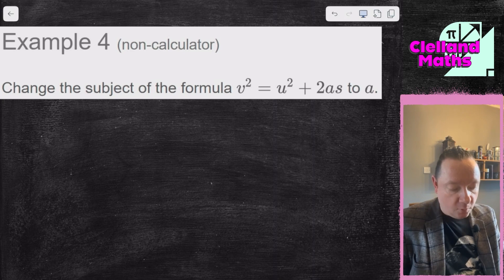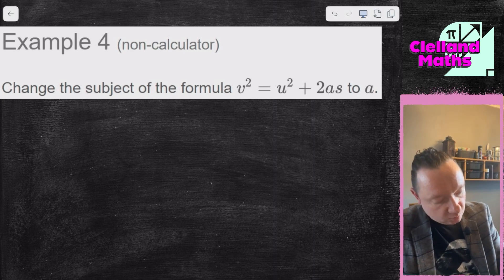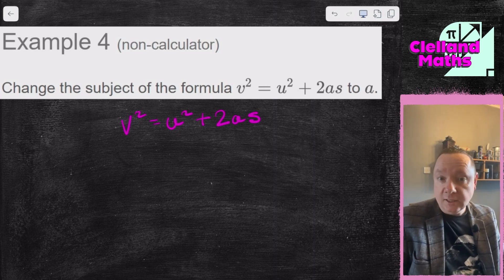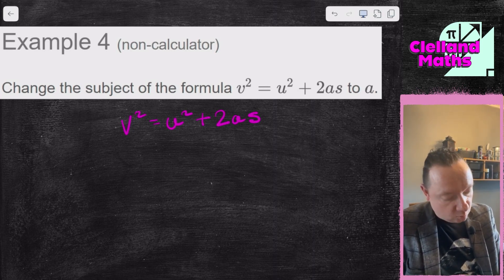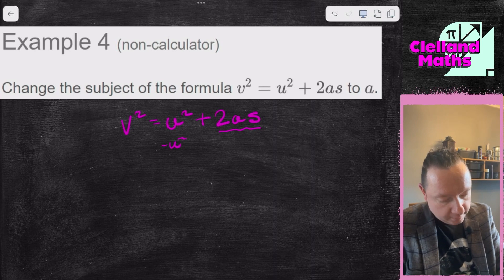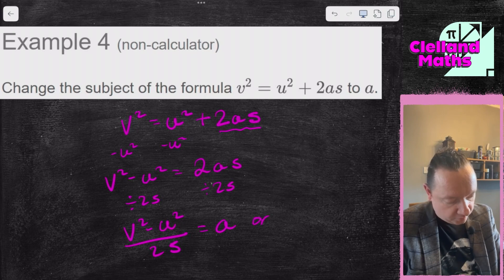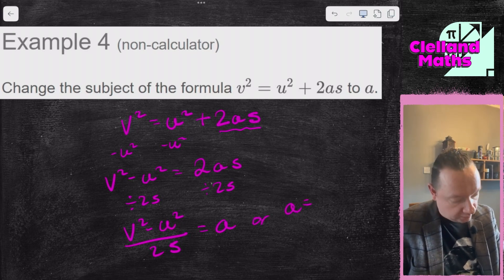Example 4: change the subject of the formula v² = u² + 2as to a. That's the equation in physics for final speed equals initial speed plus 2 times acceleration times displacement — but you don't need to know any of that. Looking at where a is, it's next to 2 and s, so I'm going to take away u² first. v² minus u² equals 2as. Then divide by 2s, so v² minus u² over 2s equals a, or a equals v² minus u² all over 2s. And we're done.